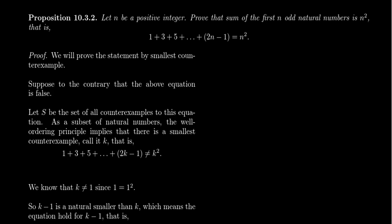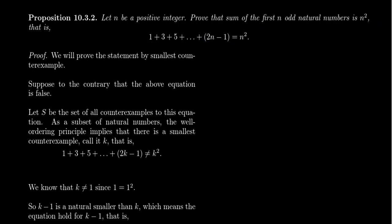Let's take a theorem we've already proven and prove it using the method of least counterexample. Let n be a positive integer. Prove that the sum of the first n odd integers equals n squared: 1 + 3 + 5 + 7 + ... + (2n − 1) = n². We proved this previously using a combinatorial proof, but we can also prove it using the method of smallest counterexample.